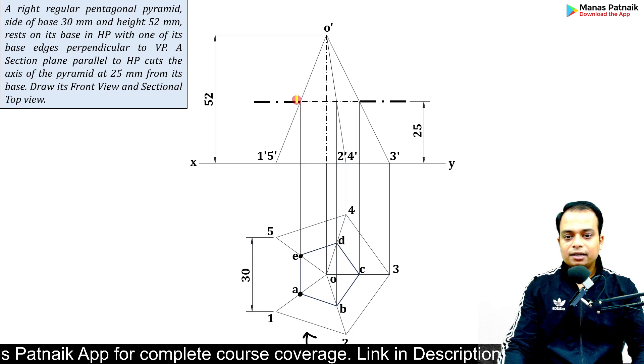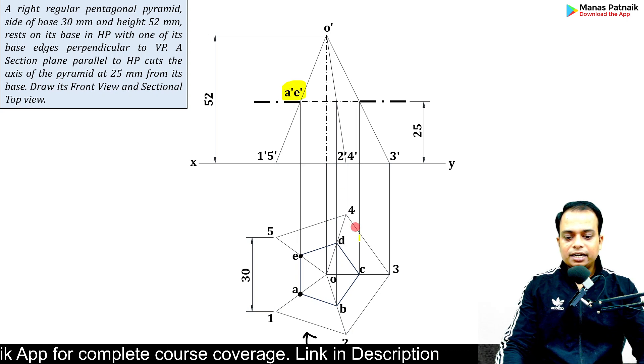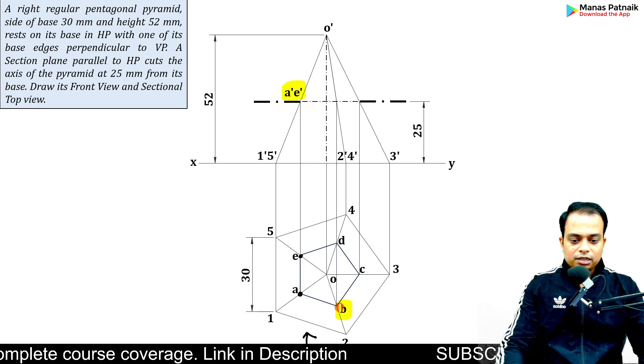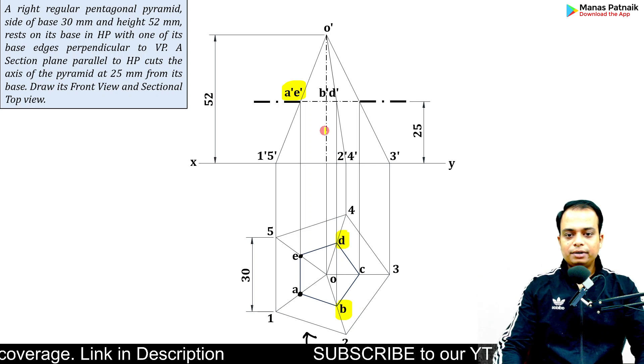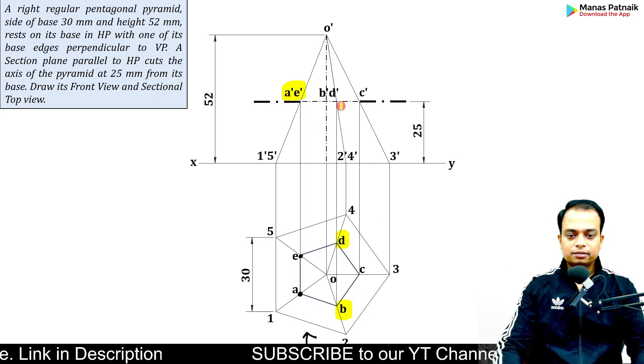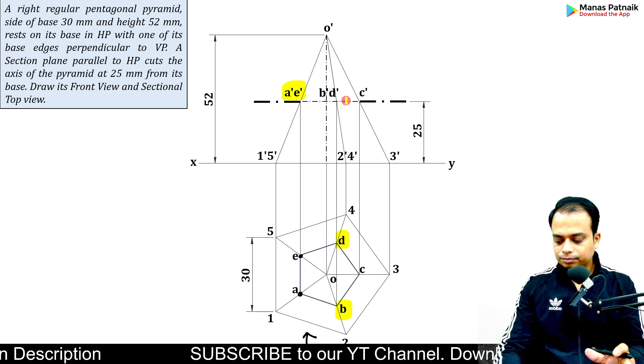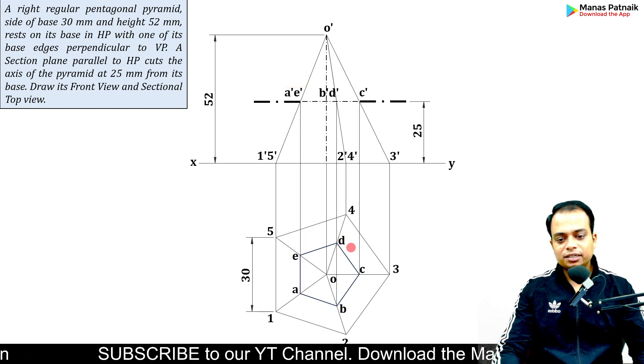What you have to write: when you view it from the front, you'll see A first and then E, so we'll write A-dash-E-dash. From the front when you look, you'll see B first and just behind it exactly behind B there is D - B-dash-D-dash. Then you've got C-dash. Easy, it's over. You just need to do the hatching.